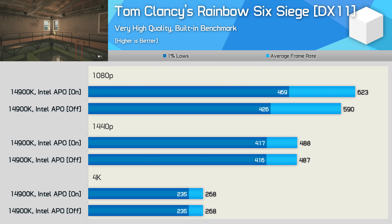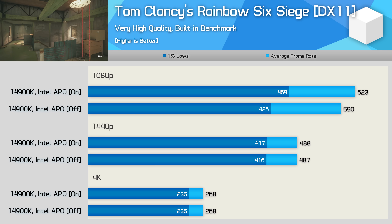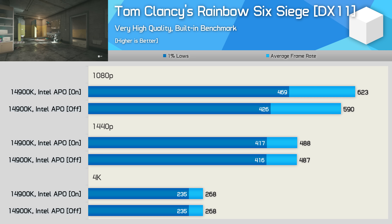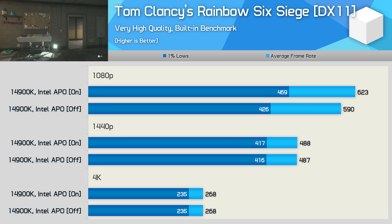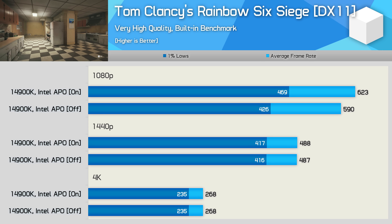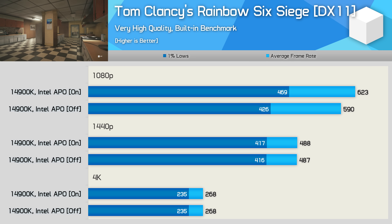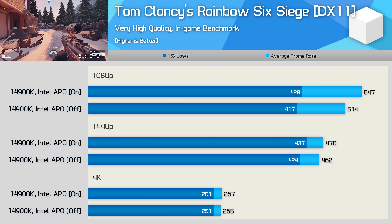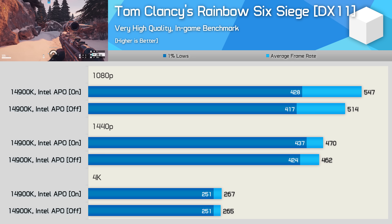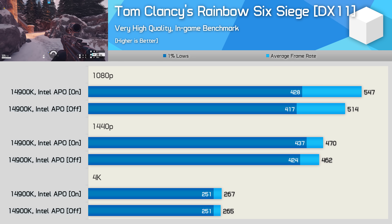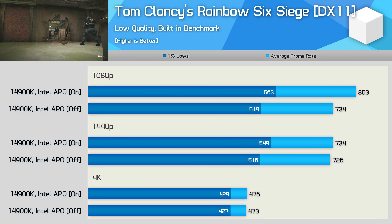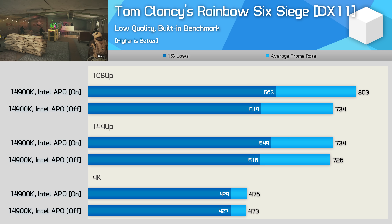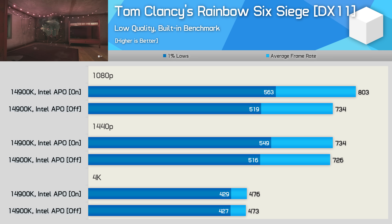The only other game supported by APO is Rainbow Six Siege. First up, the built-in benchmark results using the very high quality preset with the render scale set to 100%. Here we're looking at a 5% increase at 1080p, with no gain seen at 1440p or 4K. Truth be told, I'm not sure the 14900K needs a performance boost in this title — around 600 FPS is enough. Moving on to in-game testing, frame rates aren't quite as extreme as in the built-in benchmark, but we are looking at a 6% boost at 1080p, though nothing at 1440p or 4K. I also retested using low quality settings with render scale at 100%, giving a 9% boost at 1080p but again nothing at higher resolutions.